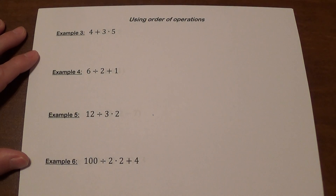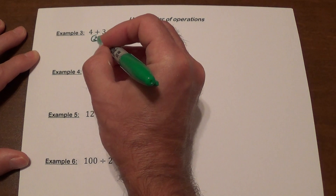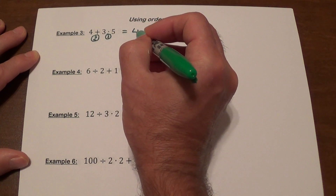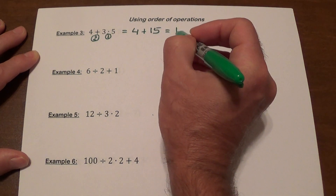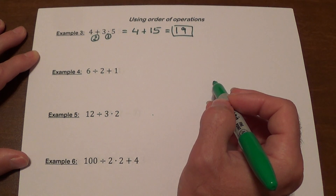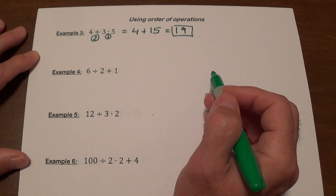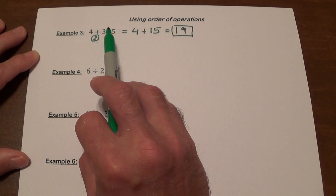Example 3: 4 plus 3 multiplied by 5. Multiplication is done before addition, so we do 3 times 5 first, which is 15, and then 4 plus 15 gives us 19. Even though the first operation you see is addition, you must do multiplication first.